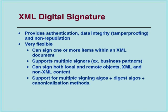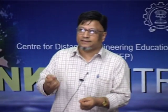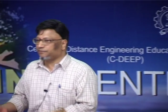It can sign one or more items within an XML document - an entire element, only the content of an element, or a sub-element. It supports multiple signers so your business partners or intermediaries along the way can sign. You might need a double signature where two people sign an element. You can also sign a remote object through a URI.